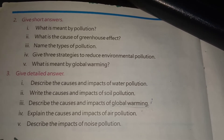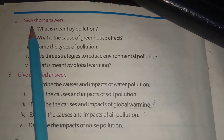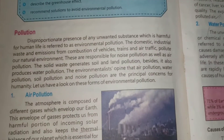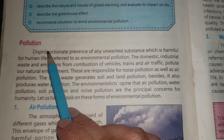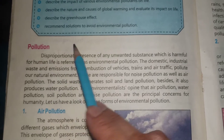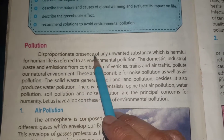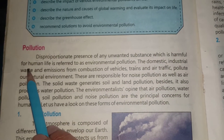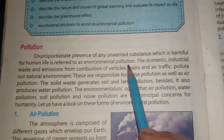Now let's go to the short questions. The first short question is: what is meant by pollution? Its answer is given on page number 14. Pollution — the definition is: the disproportionate presence of any unwanted substance which is harmful for human life is referred to as environmental pollution.